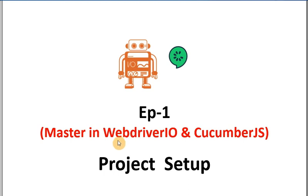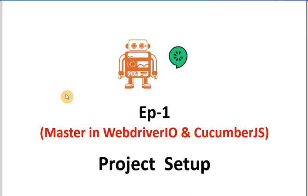Because with WebDriverIO and CucumberJS we are going to create an automation testing project. With the help of this automation testing we can easily test existing web applications and mobile applications as well. These two we are going to use in combination to create automation test cases for web, mobile web, and mobile app.